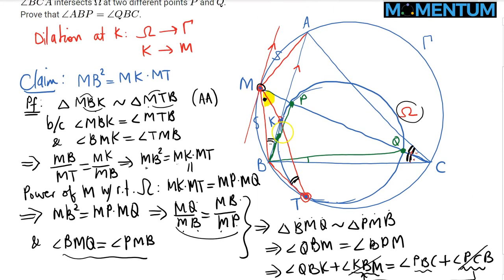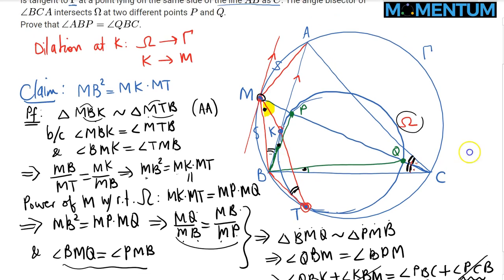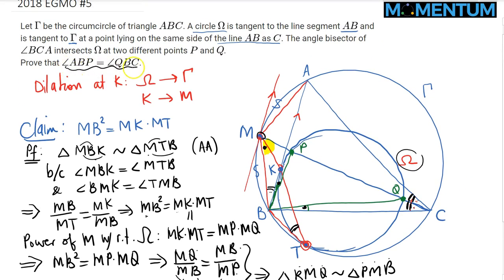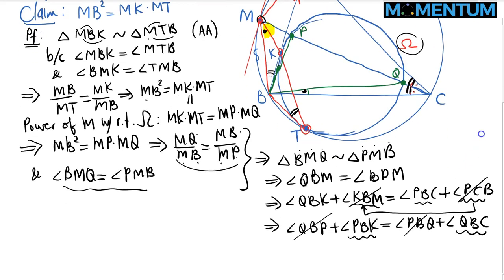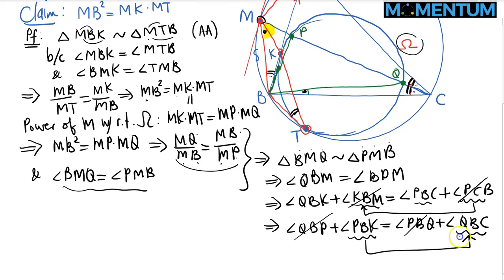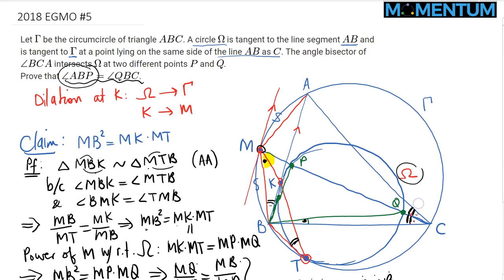We just established the congruence of these two angles as suggested. PBK is the same as PBA or ABP, and QBC is also given. Therefore, this is confirmed and we are done with this problem.